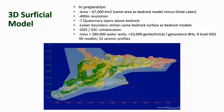One final model in preparation by the GSC is a 3D surficial model which covers 67,000 square kilometers of Southern Ontario at 400-meter resolution, with seven Quaternary layers above the bedrock. The lower boundary utilizes the same bedrock surface as the bedrock models. It uses greater than 280,000 water wells, 33,000 geotechnical geoscience boreholes, local OGS 3D models, and 52 seismic profiles.